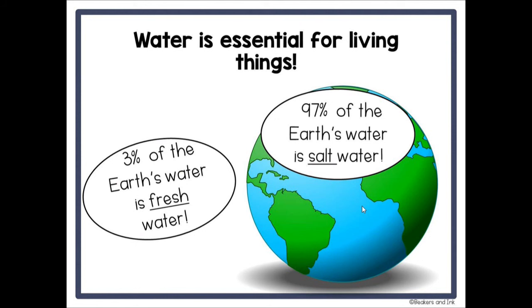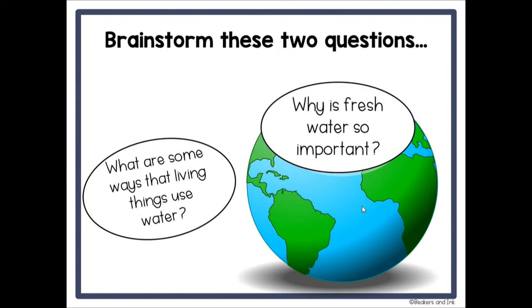We can't live without water. It's essential for all things. And you probably know that 97% of the Earth's water is salt water, that's mostly our oceans. Now, if we look at the fresh water, 3% of what's left is fresh water. Now, not all of that fresh water can be used. Some of it's locked up in glaciers. So it's really important that we conserve the water that we have because we don't have that much fresh water. We need water for so many of life's functions. So I want you to just take a couple minutes and on your paper, brainstorm the answers to these questions. Why is fresh water so important? And what are some ways that living things use water? So go ahead, pause it, take a second to write your answers, and hit the play button when you're ready to go again.